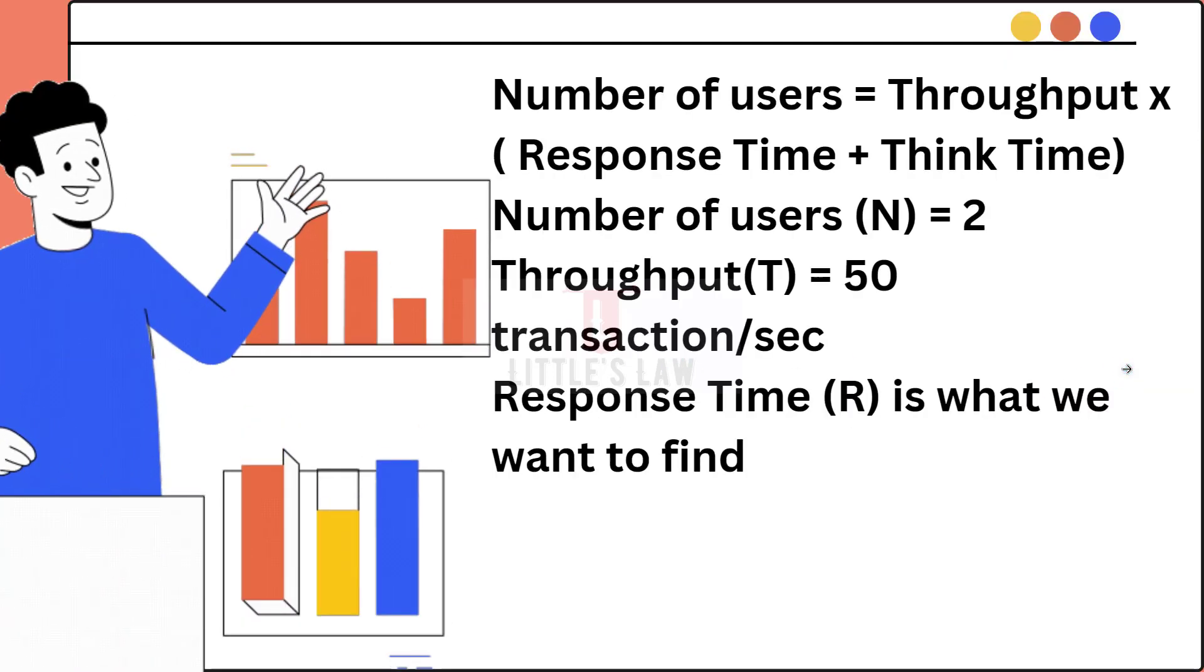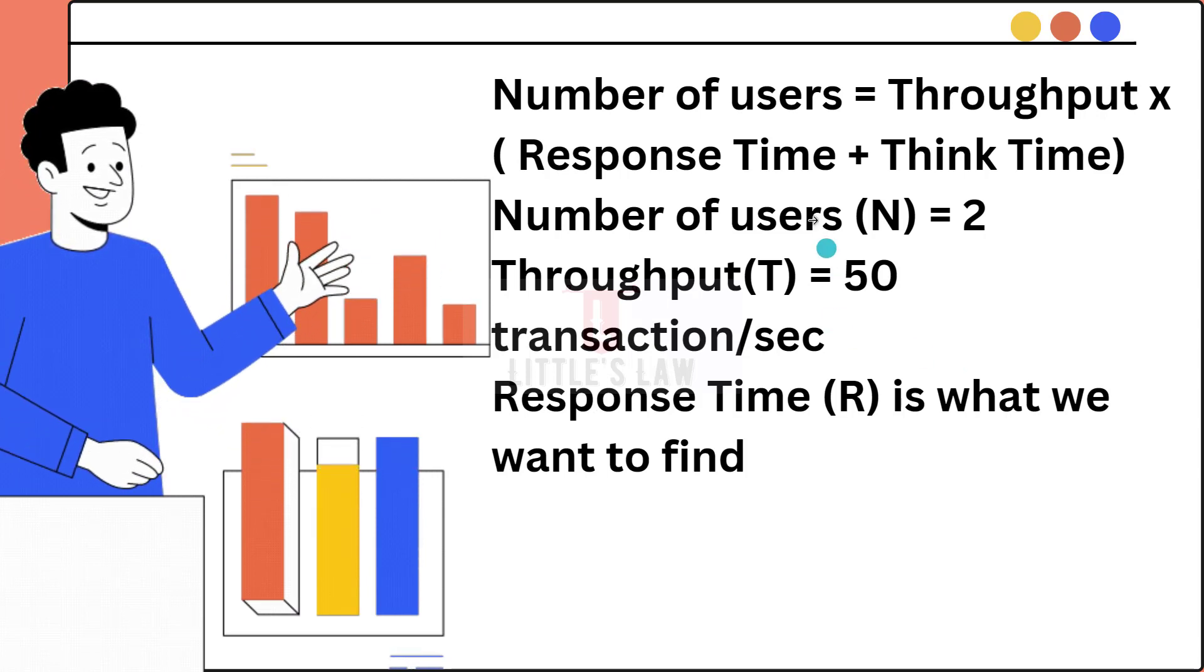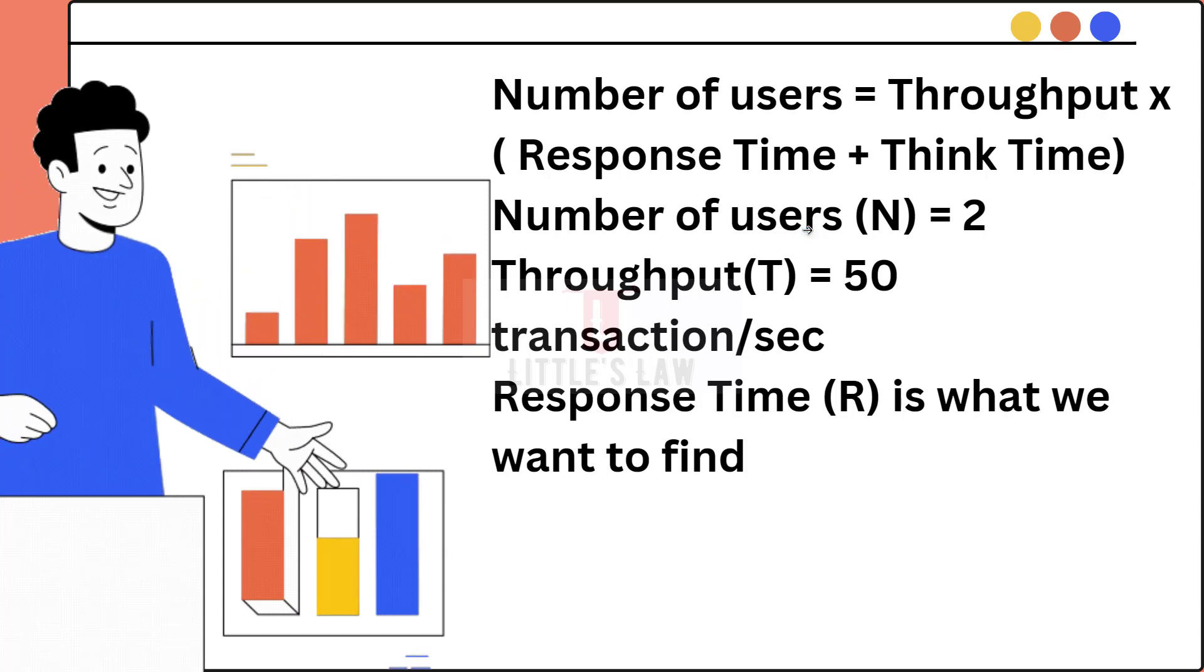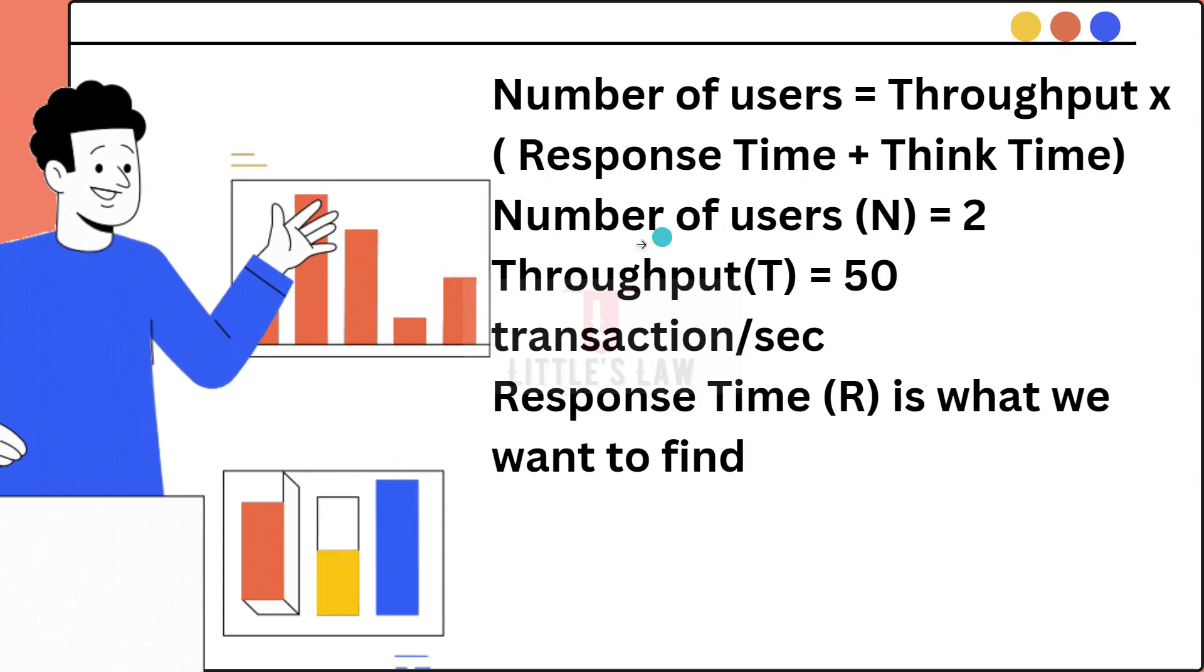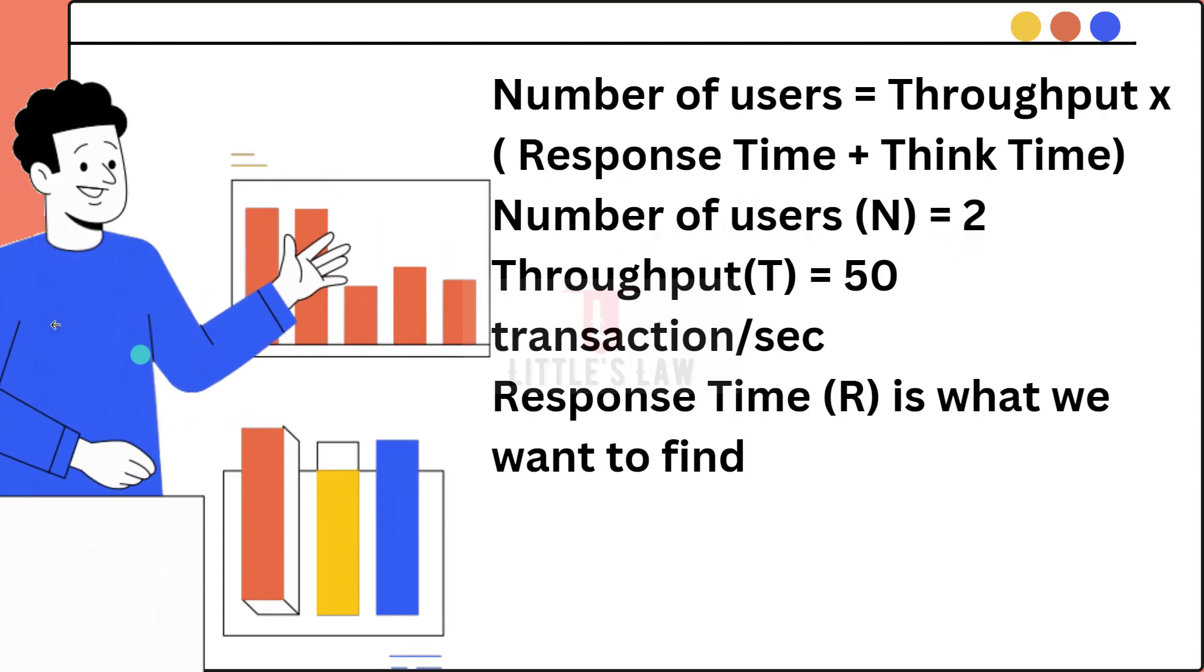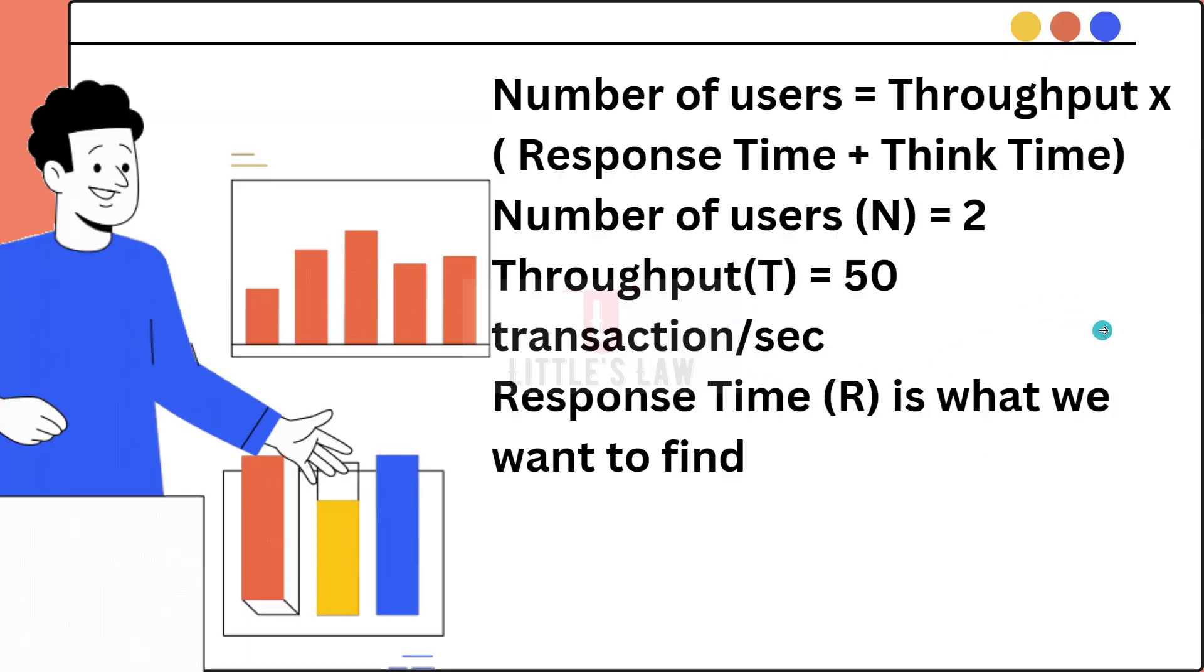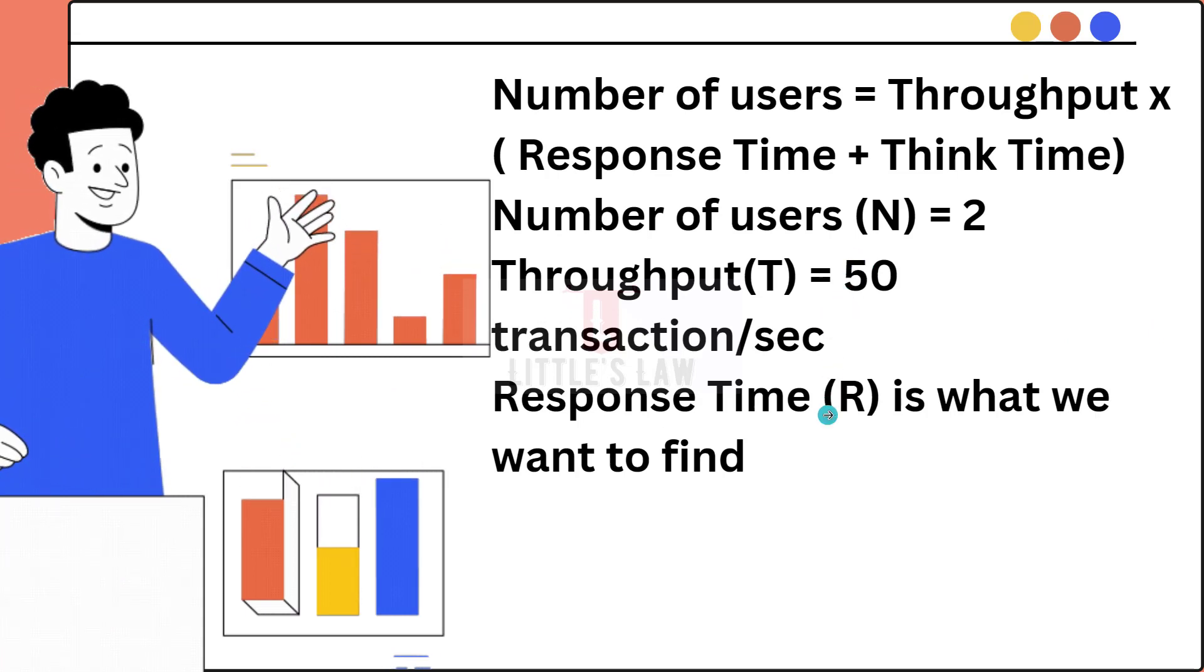We use the Little's Law formula where the number of users equals throughput multiplied by response time plus think time if we have any. In this scenario, we have the number of users as two. We have two users who are completing 50 transactions per second, which is the throughput.